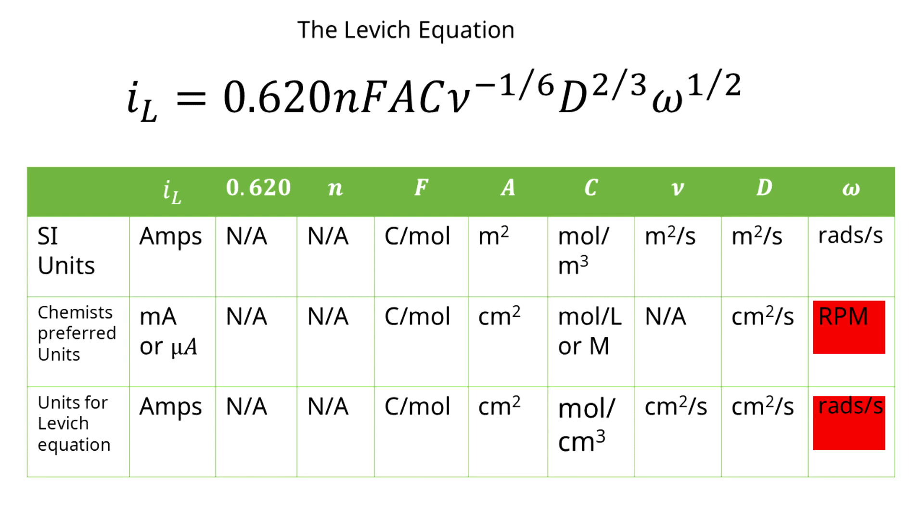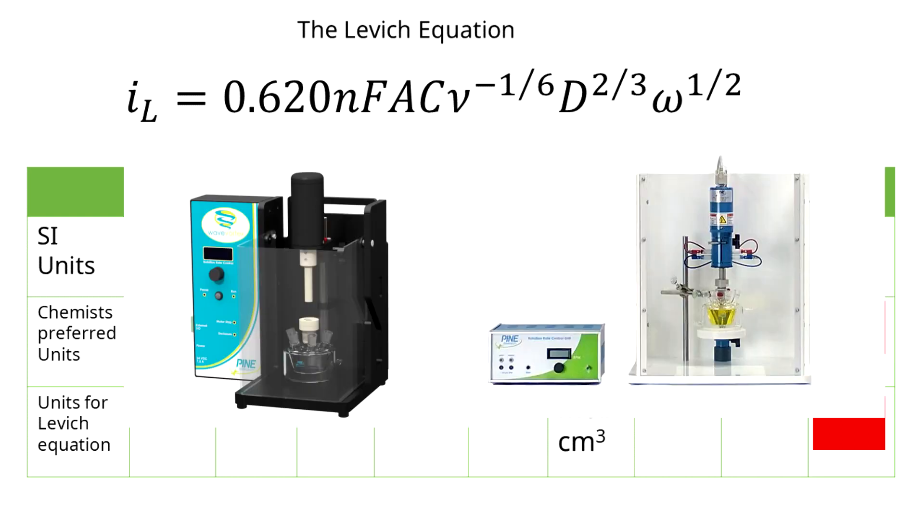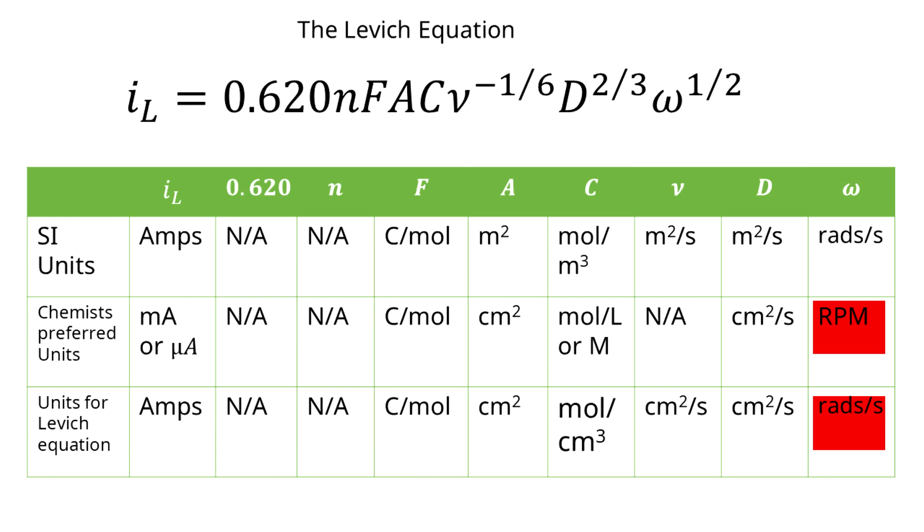Lastly, the angular rotation rate that chemists generally use is rotations per minute, or rpm. This comes from the fact that most rotators report the rotation rate at rpm instead of radians per second. The units used in the Levich equation as well as SI units are in radians per second, so you need to make sure that you convert between rpm and radians per second.